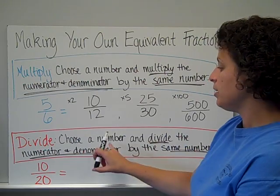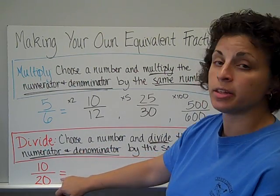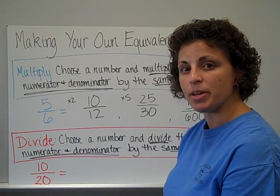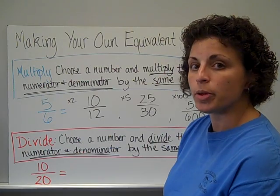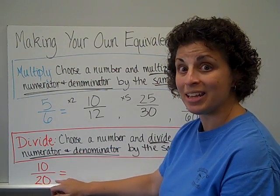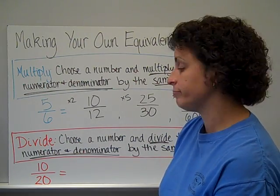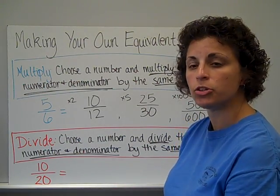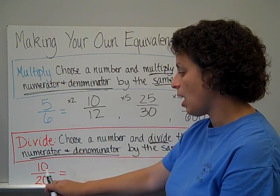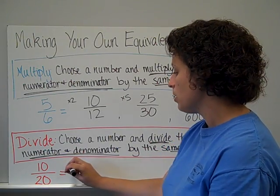When we divide, we get to choose a number to divide by. And we're going to divide the numerator and the denominator by the same number. The only problem is, that number that we pick has to go into the numerator and into the denominator. So, if I divide by one, then I'm going to get the same thing, so I'm not going to do that. Can ten be divided by two? Yes, it can. I also have to make sure that two will work with the denominator, which it will. So, I'm going to divide by two.